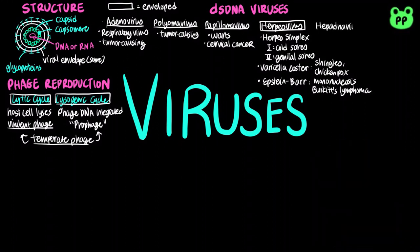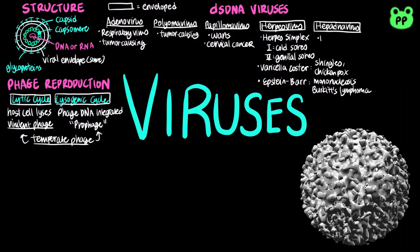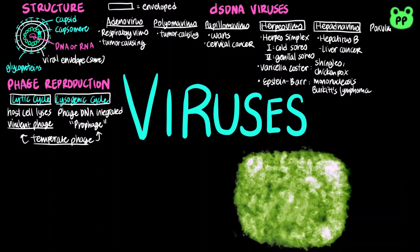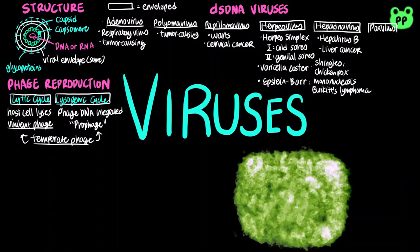Hepatna virus also contains viral envelopes. It includes hepatitis B virus, which causes hepatitis — the inflammation of liver tissues — and can lead to liver cancer. Lastly, pox viruses are enveloped and include smallpox and cowpox viruses.